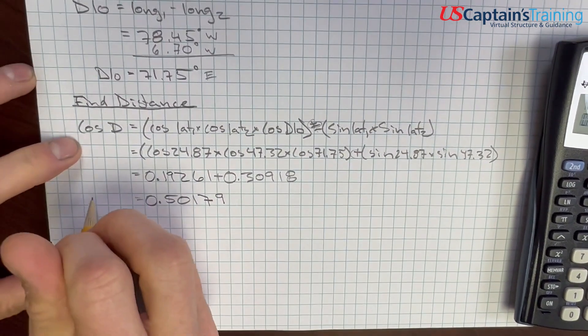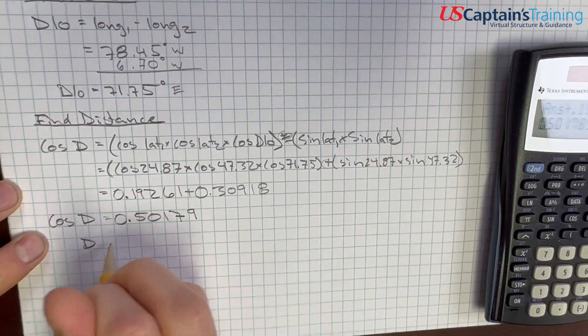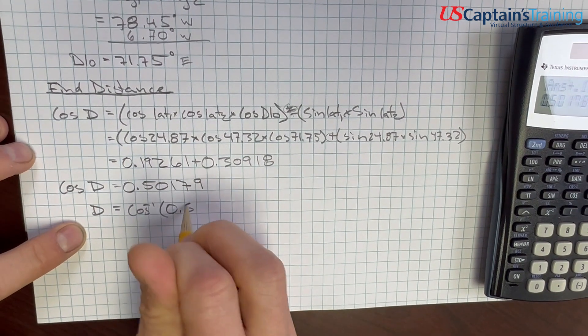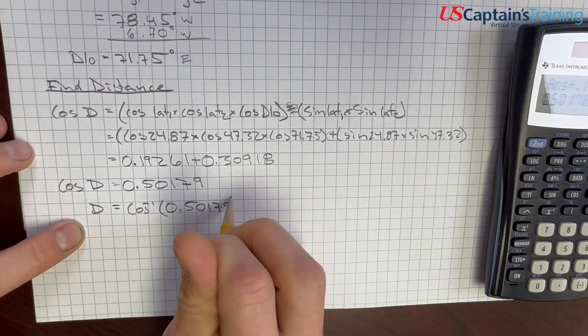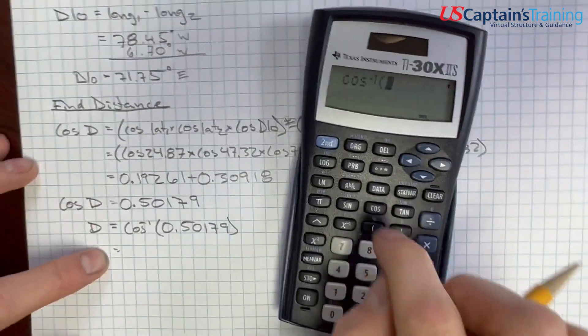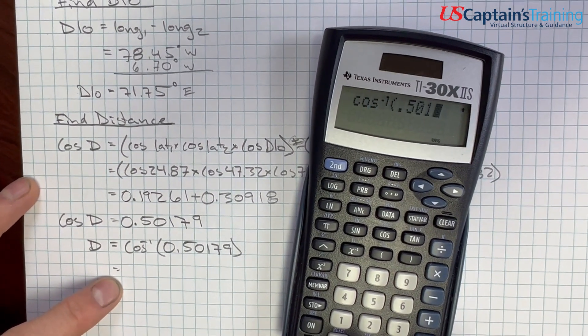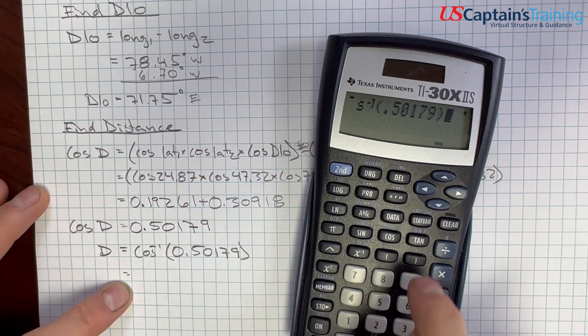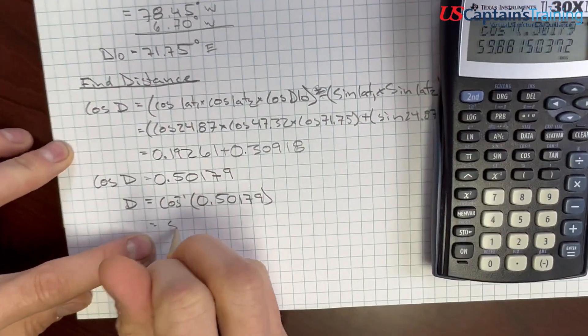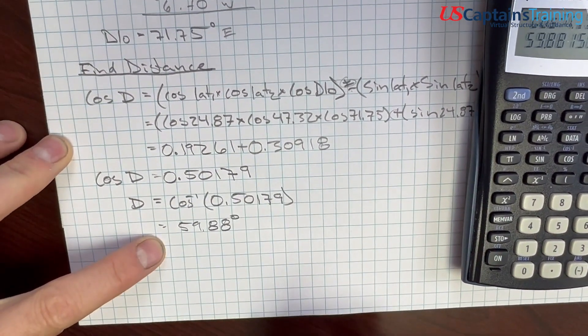Remember, this is actually the cosine of the distance. Since we want distance, distance is equal to the inverse cosine of 0.50179. So, second inverse cosine 0.50179 equals 59.88 degrees.